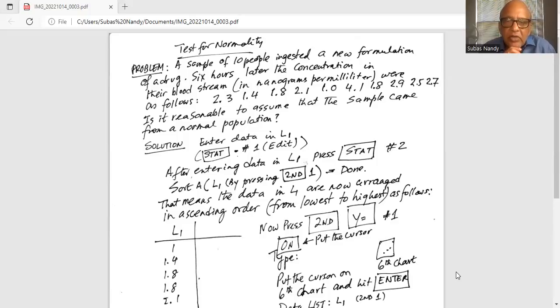Now after entering the data, press stat button again. Then number two, sort A. Sort A stands for sort the data in ascending order from lowest to the highest. So inside the parenthesis we need to put L1. We do that by pressing second button and 1. That will get you L1. Second and 1 gets you L1 inside the parenthesis. Close the right parenthesis and hit enter and it says done.